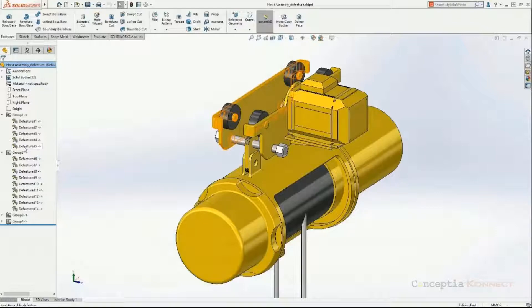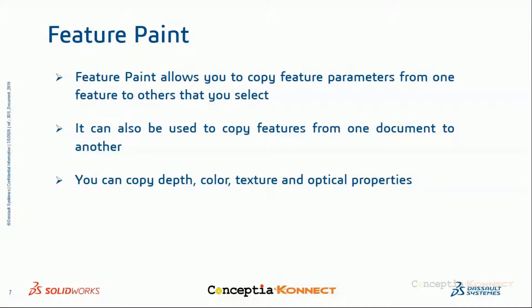The next tool is Feature Paint. Feature Paint is used to copy features from one file to another. For instance, you can select a Boss Extrude from one part and apply its parameters — such as depth, end condition, draft angle, or any option of that extrude — to another Boss Extrude in a different part. It is used when the same features exist in both files but with different parameters. We can copy extrude depth, color, texture, and optical parameters.